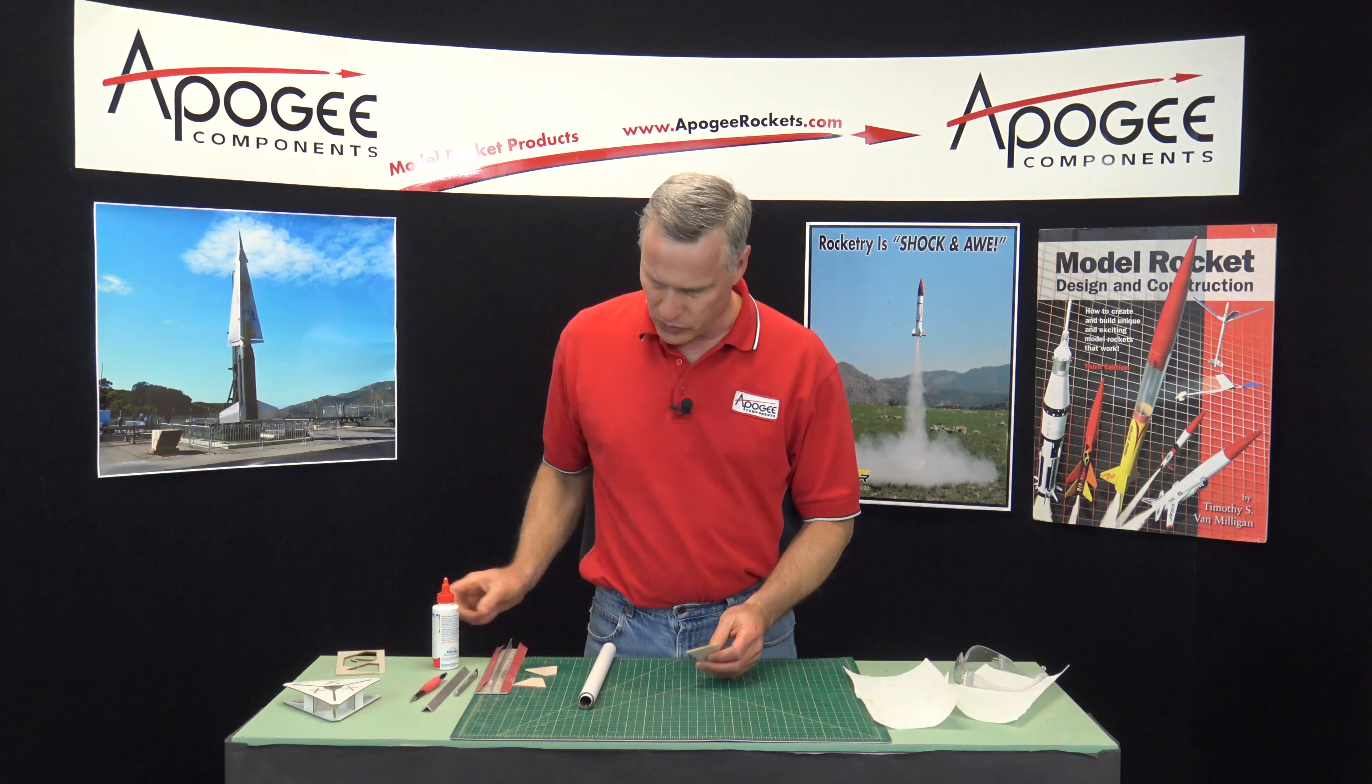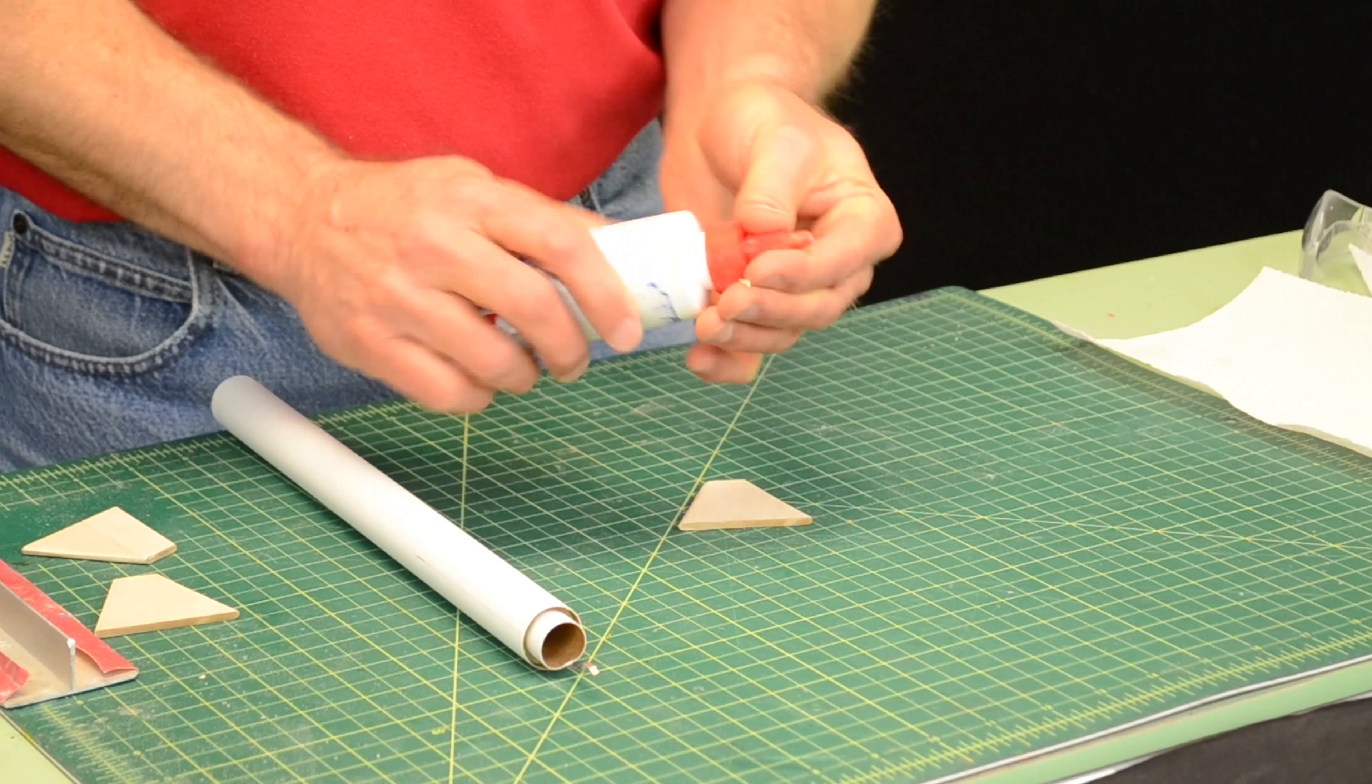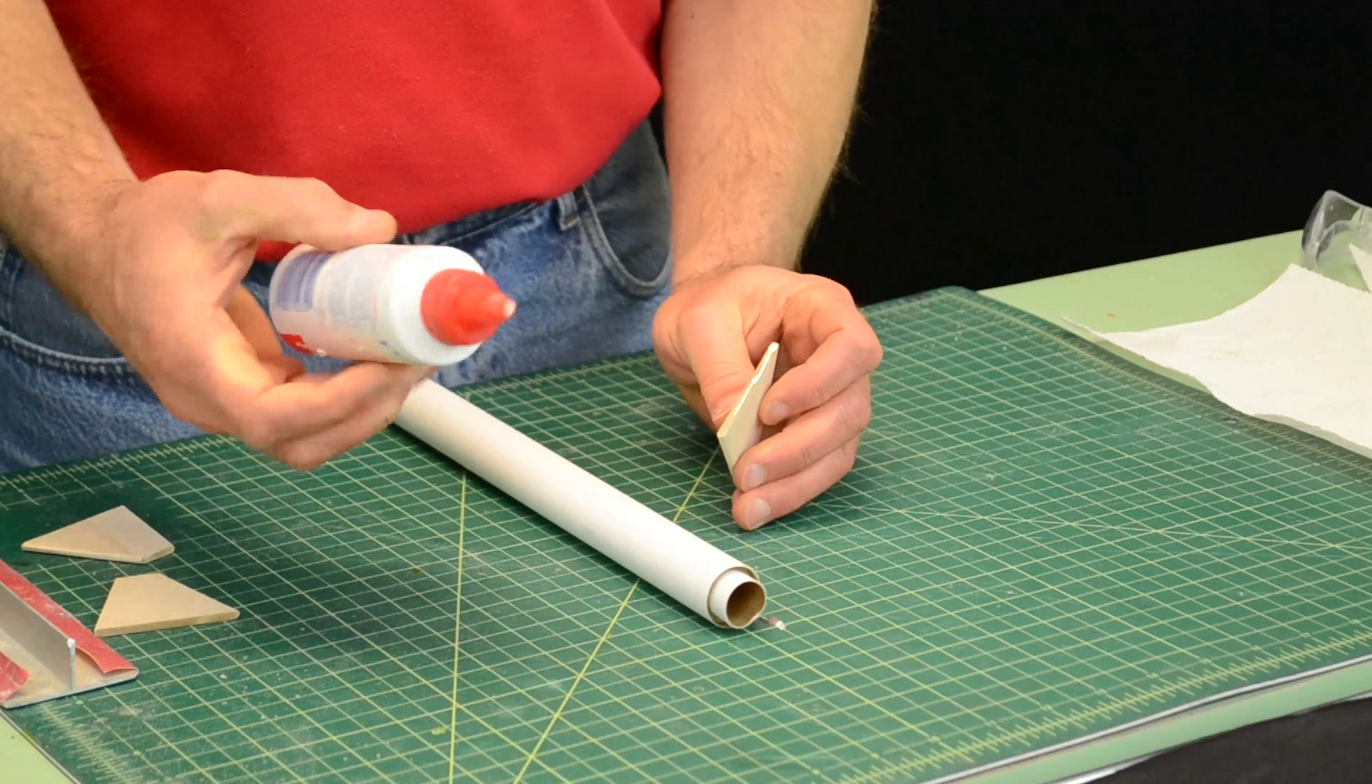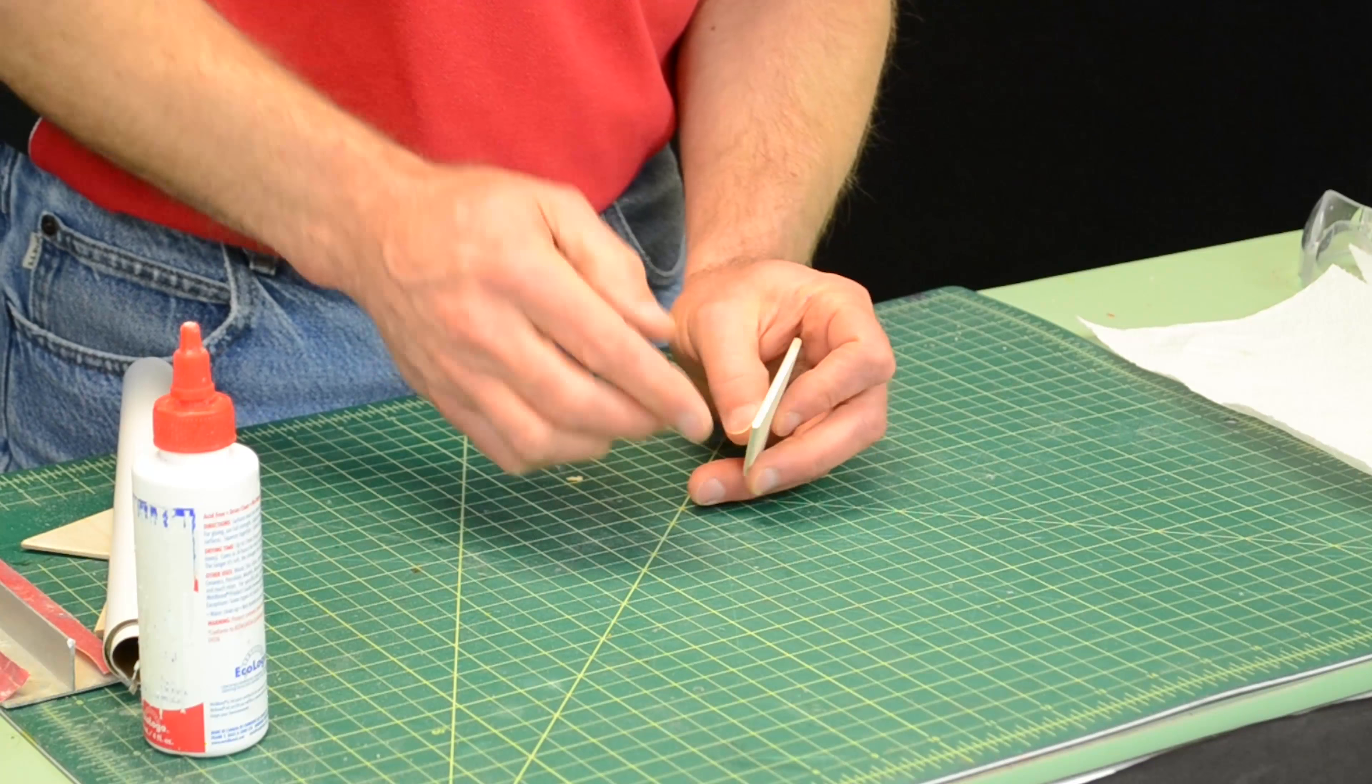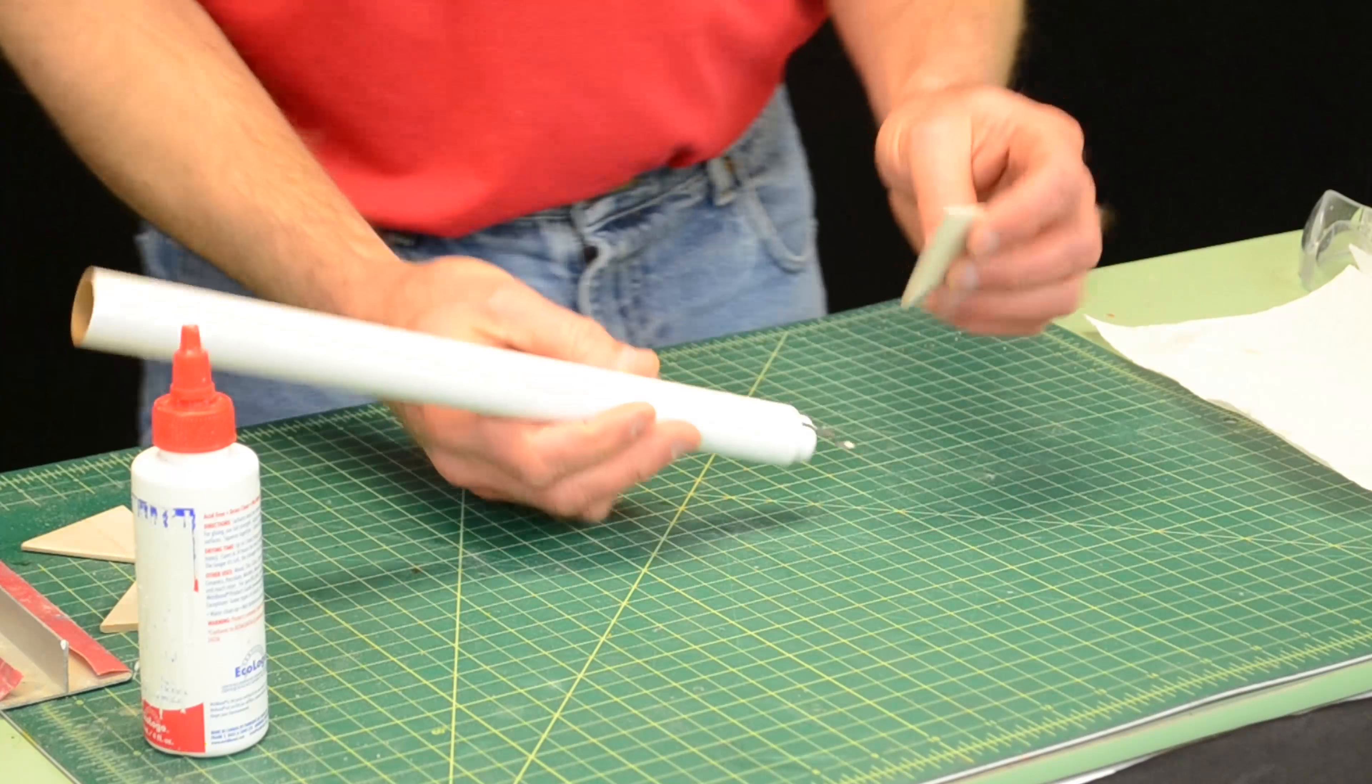The fins are dry now, so this is where we attach them to the rocket. So I take my fin, unclog the glue bottle. Again, I'm going to put a thin layer of glue on it, just about like that. And I'm going to rub it in. And again, I'm going to take about 80 to 90% off.